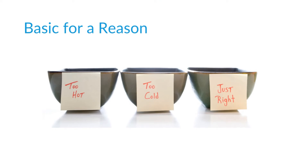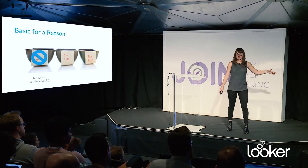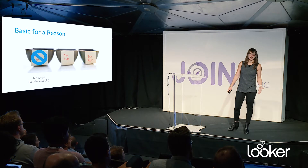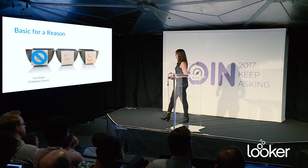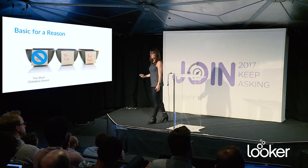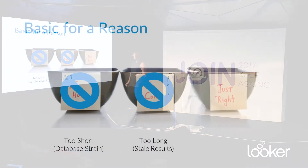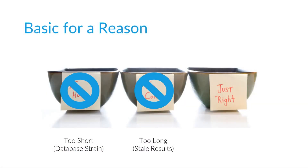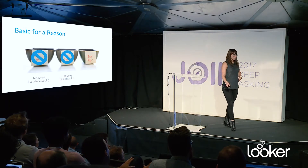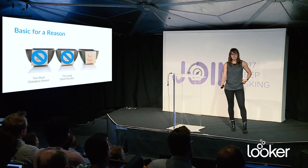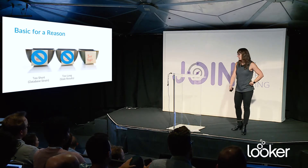I consider that initial caching to be basic for a reason: sometimes that cache length you set in Looker was too short. That means you went back to your database to get fresh data, but your database actually didn't have any more data in it — so you could have just used the cached results and gotten the same answers, putting unnecessary strain on your database. The other side is if your cache setting is too long, you'll get stale results because there was fresh data in your database, but you're hitting the cache instead of going back to get that fresh information.